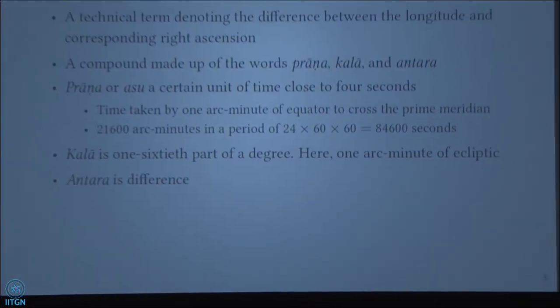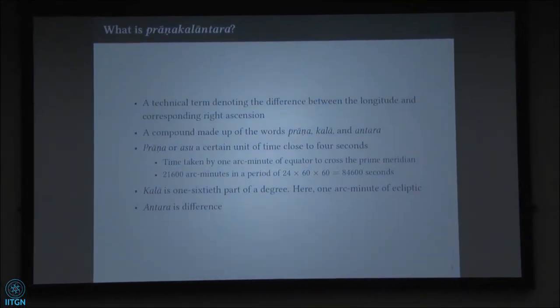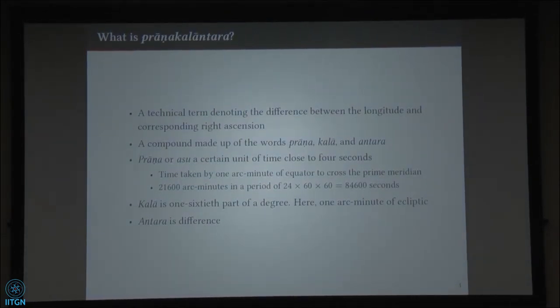The Lagnaprakarna has 8 chapters. The first chapter is dedicated to setting the foundation. Madhava discusses various different astronomical parameters which will be used in subsequent calculations, and Pranakalantra is one such parameter. It is a technical term which denotes the difference between the longitude and corresponding right ascension. It is a compound word made up of three words: Prana, Kala, and Antra — where Prana is a measure along the equator, Kala is a measure along the ecliptic, and Antra means the difference.